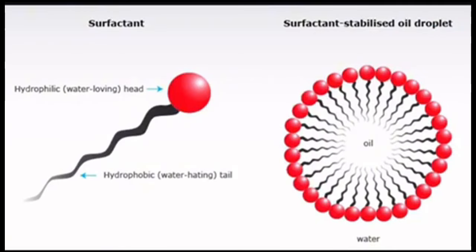A surfactant contains two parts. The first part is a polar hydrophilic head. The second part is a non-polar hydrophobic tail. When mixing oil and water, the hydrophilic head orients toward the water molecules and the hydrophobic tail orients toward the oil molecules — this is how oil and water become miscible.